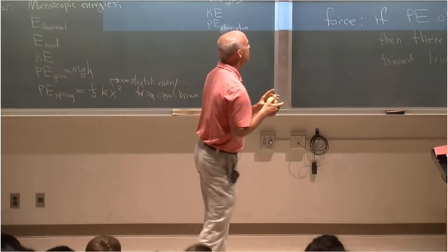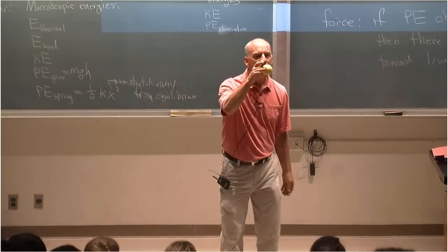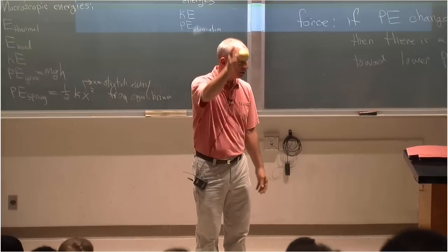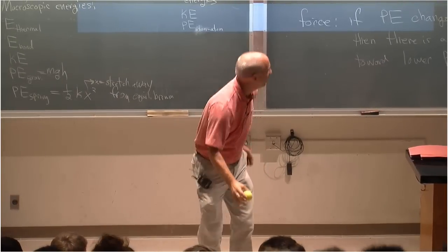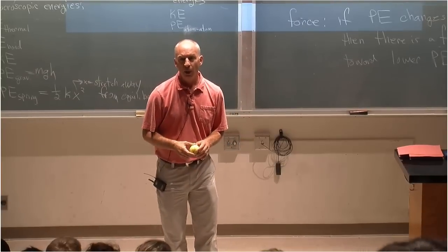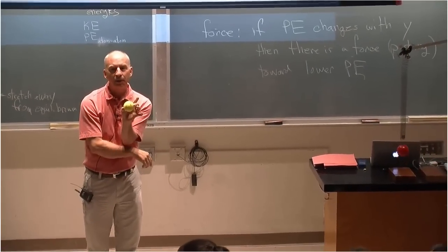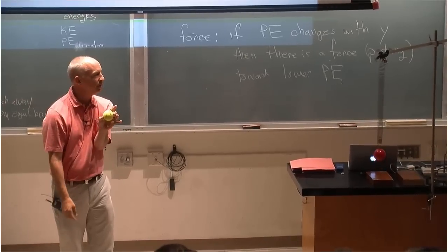It turns out that if the potential energy changes with height, which it does, it's lower this way, then there's always a force toward lower potential energy. The gravitational force is down because it decreases the potential energy.